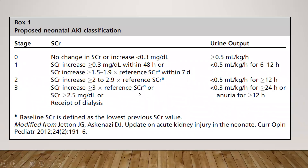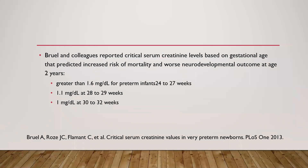To avoid confusion, the current classification followed in standard textbooks uses these findings. Askenazi and colleagues reported a critical serum creatinine value based on gestational age, useful in situations where no baseline creatinine is available. They found risk of mortality and worse neurodevelopmental outcomes at two years with these values: 1.6 for newborns 24–27 weeks, 1.2 for 28–29 weeks, and 1.0 for 30–32 weeks of gestation.